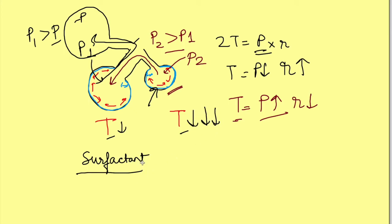We can understand it this way: suppose 10 molecules of surfactant are present. In the larger alveolus they will be dispersed far apart. But the same 10 molecules in the smaller alveolus will be packed closer together. So their effect on reducing surface tension in the smaller alveolus will be much greater — that is how surfactant reduces surface tension more in the case of smaller alveoli.